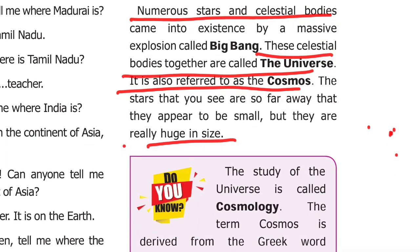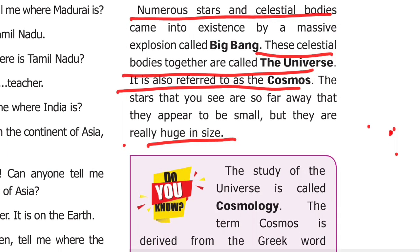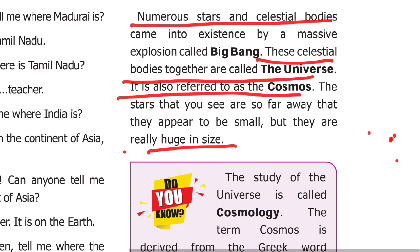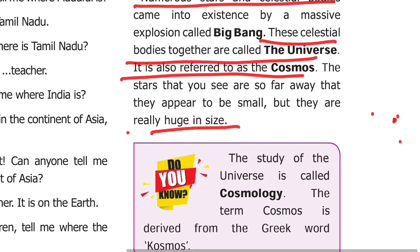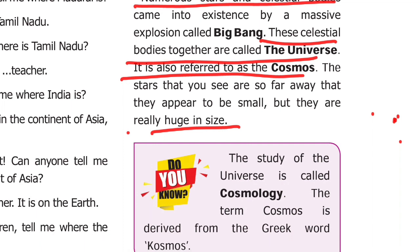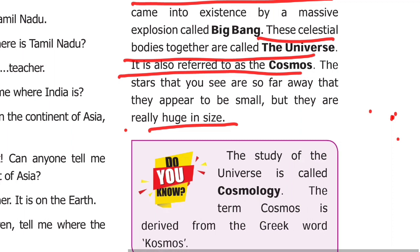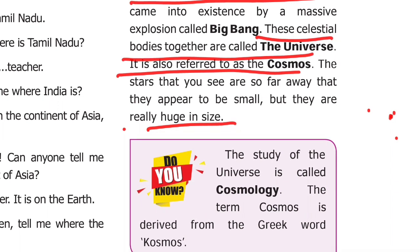The universe came into existence by a massive explosion called the Big Bang. The celestial bodies together are called the universe. These celestial bodies include the sun, moon, planets, stars, and many other objects that exist in space. The universe is also referred to as the cosmos.